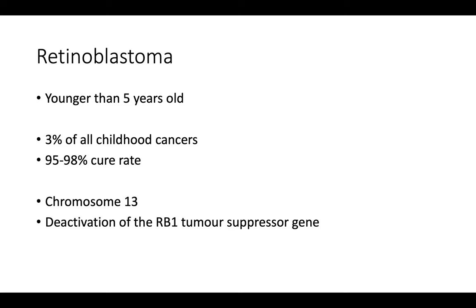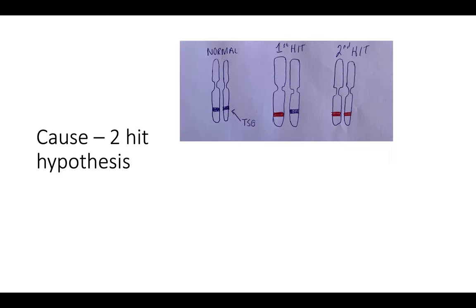What we know is that it's a deactivation of this gene that causes retinoblastoma. With most deactivation mutations in tumour suppressor genes, they are recessive in nature, so in order for a cell to become cancerous, both copies of the tumour suppressor gene must be mutated. This is called the two-hit hypothesis, which I've illustrated in the diagram I've just drawn.